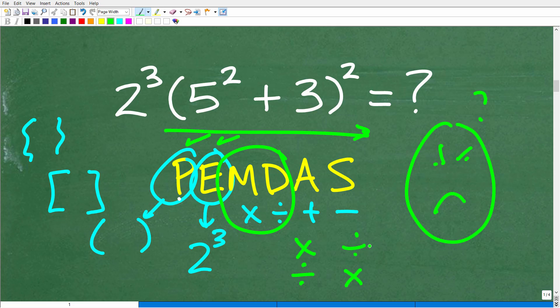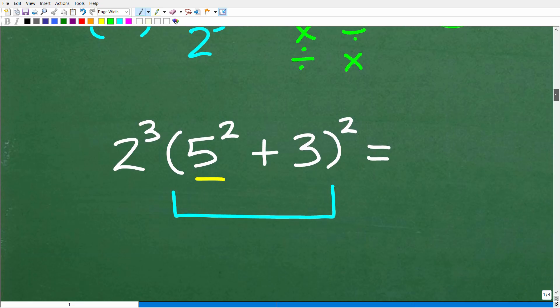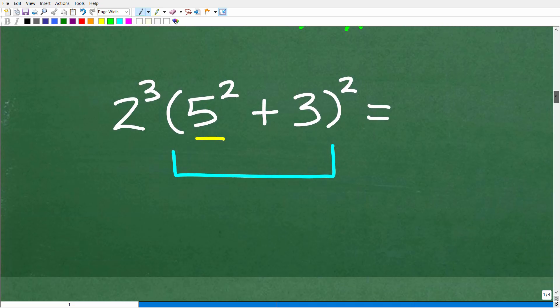So again, if you have both multiplication and division in a problem, you have to assess, hey, what do I see first from left to right? That's what you do first. And addition and subtraction work the same way. Okay, so let's put this all together and apply our knowledge of the order of operations to this problem.